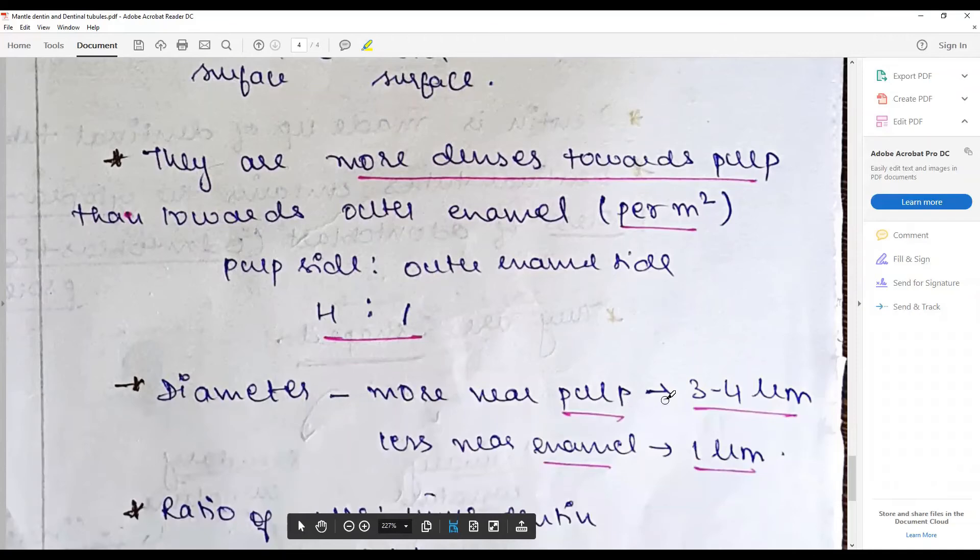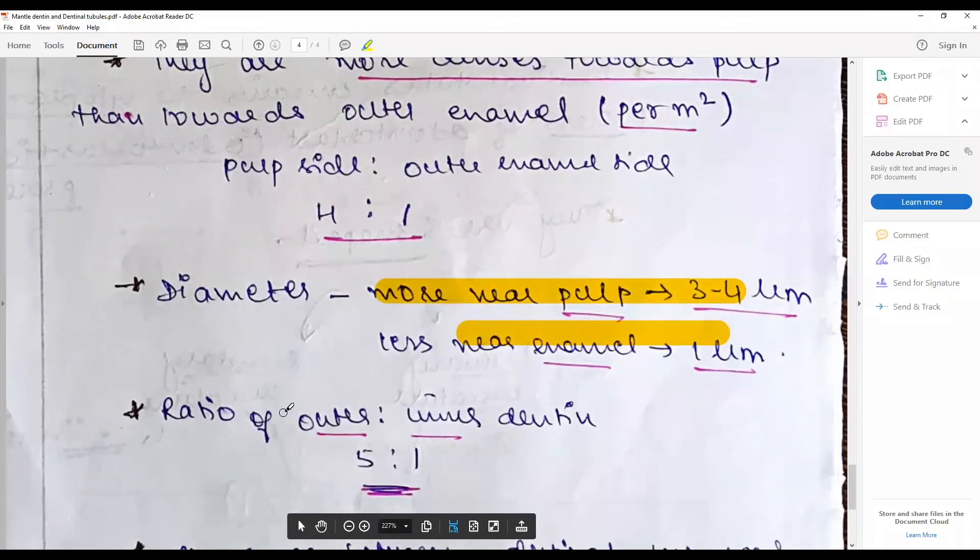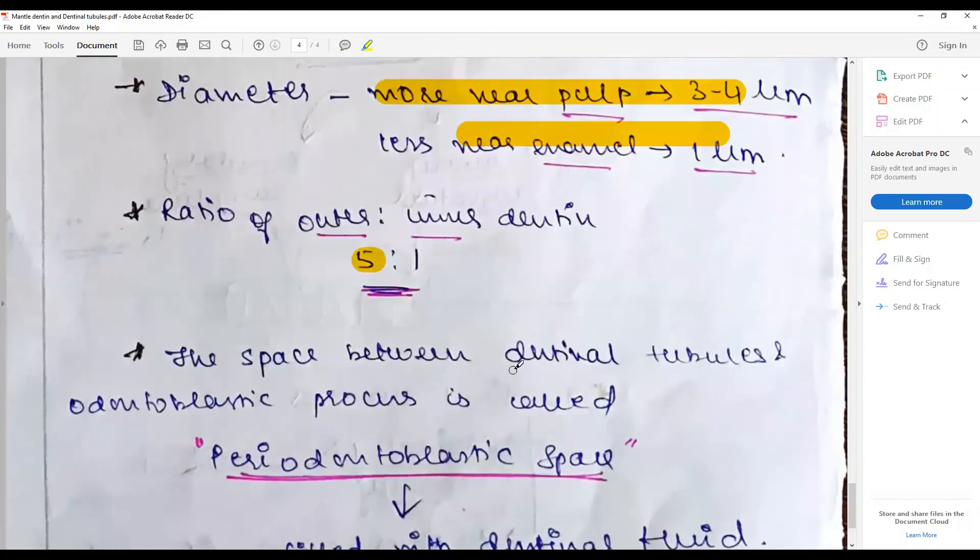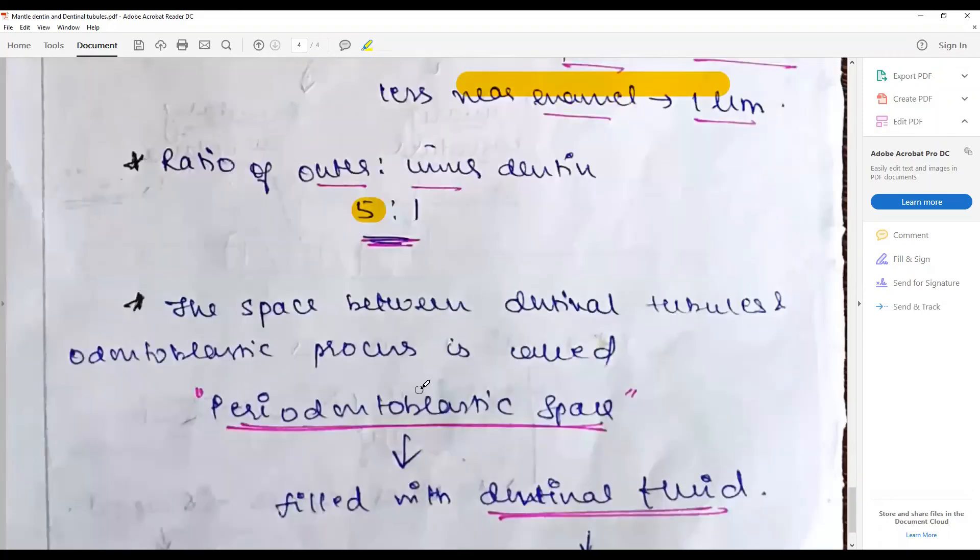The diameter near to the pulp is bigger, whereas nearer to the enamel it is smaller. The ratio of the outer to inner is about 5 to 1. The space between the dentinal tubule and odontoblastic space is called periodontoblastic space.